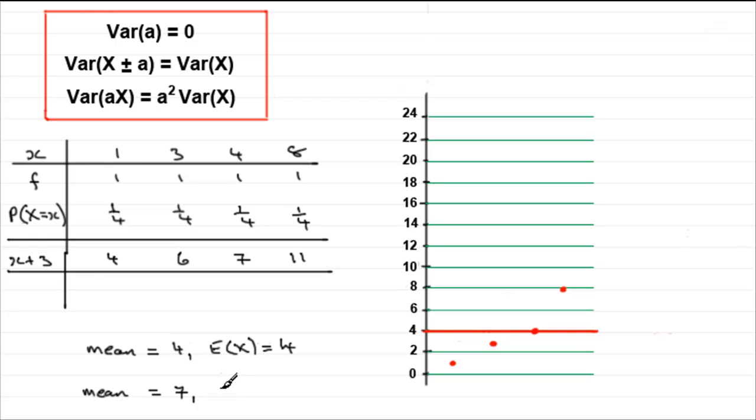And this shouldn't come as any surprise. In an earlier tutorial, what we said was that if you've got a random variable and you add a constant to it, in this case 3, you end up with E(X) plus that constant 3. So you're going to have E(X), which was 4, 4 plus 3 is 7. So you're going to get 7.